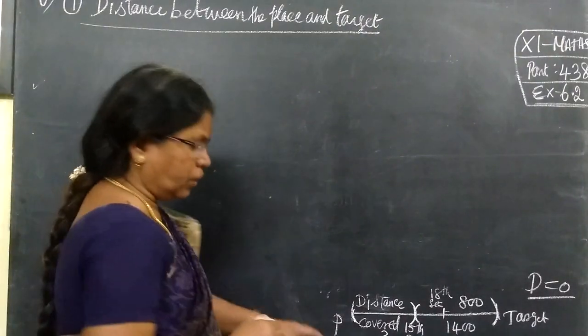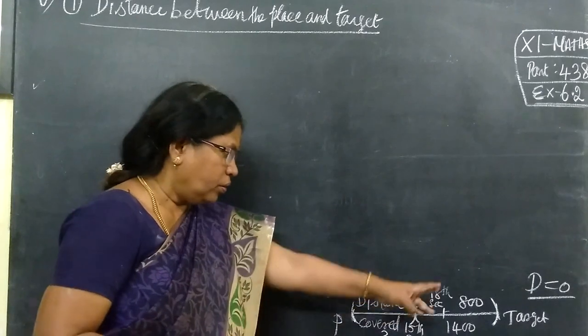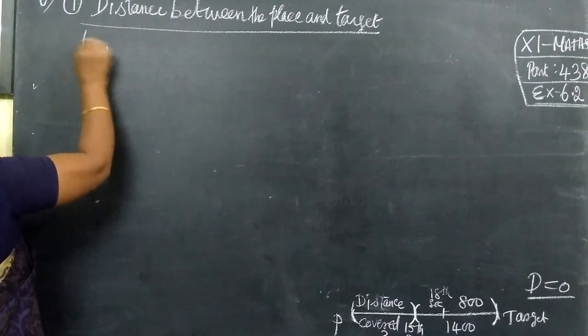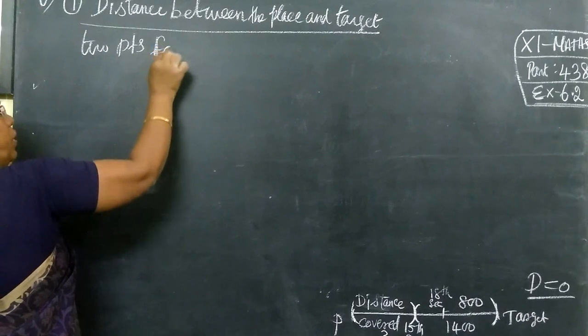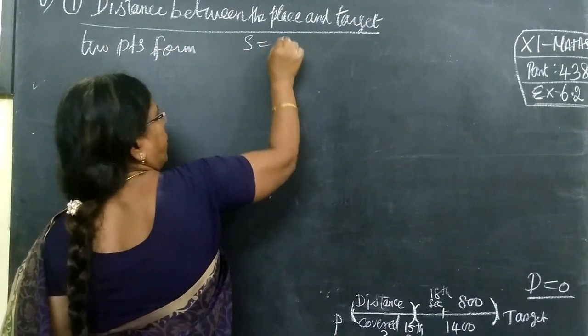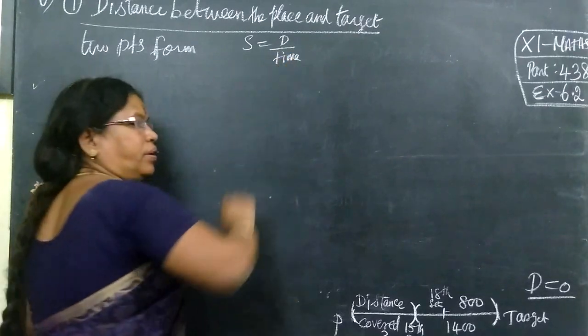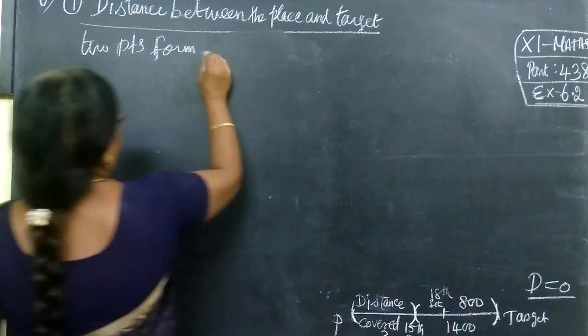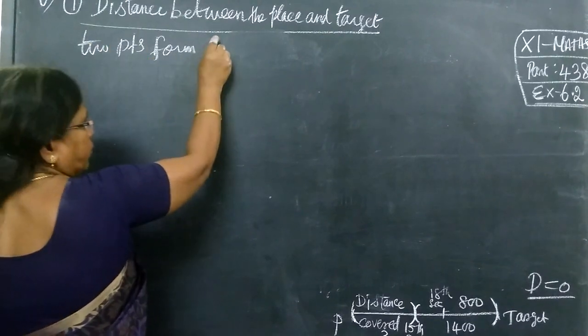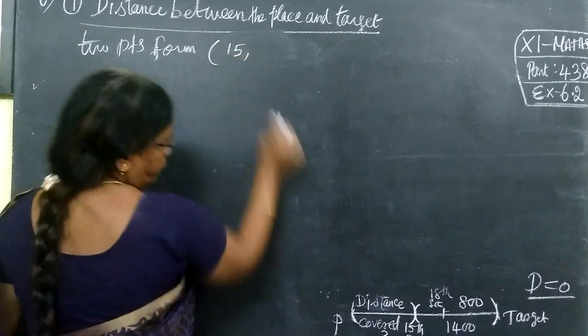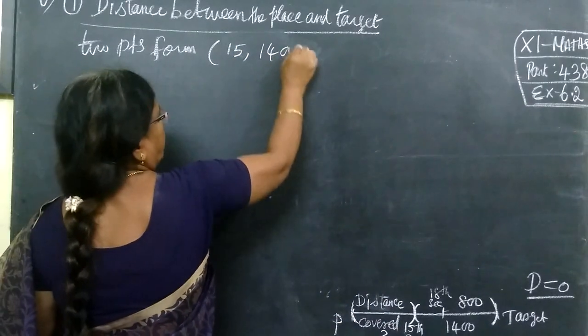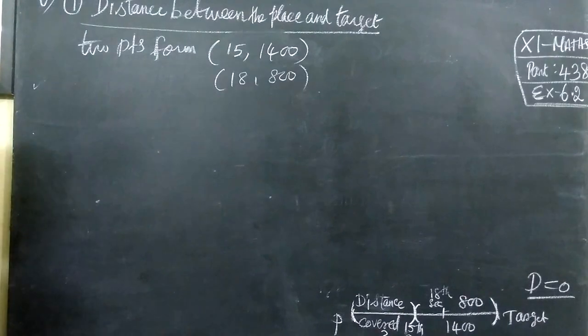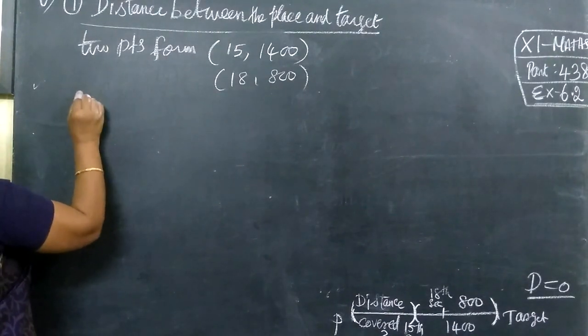The first step is to find the distance. We are considering two points. That is, distance by time. These two data points we'll use.